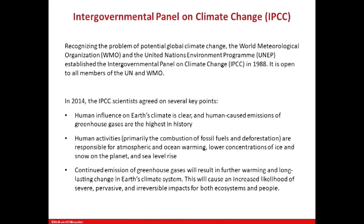The human activities — the combustion of fossil fuels and deforestation, which we talked about in lecture one — are responsible for atmospheric and ocean warming, lower concentration of ice and snow on the planet, and sea level rising. What happens if sea level continues to rise? We'd get rid of all the beaches in Florida. It is well documented that some beach lines have receded. The trend is not one that's promising.